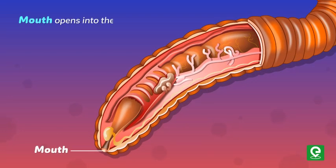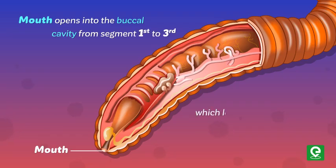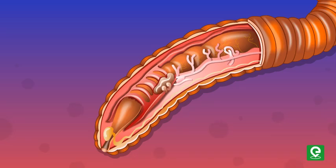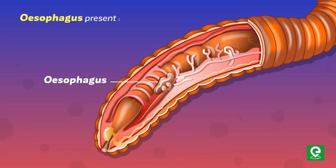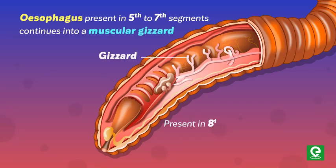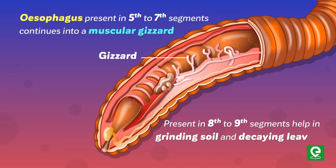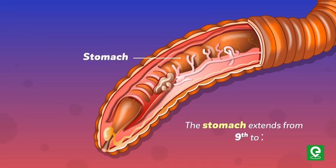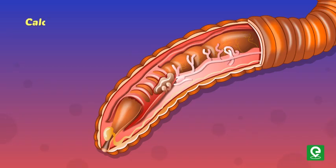The mouth opens into the buccal cavity from segments one to three, which leads to the muscular pharynx. A small narrow tube, the esophagus, present in segments five to seven, continues into a muscular gizzard present in segments eight to nine, which helps in grinding soil and decaying leaves.